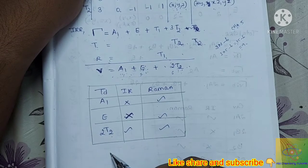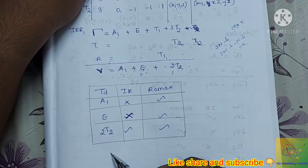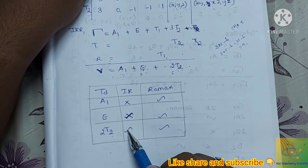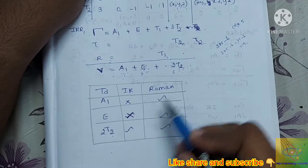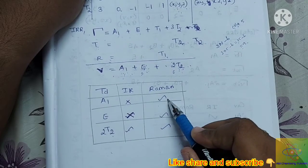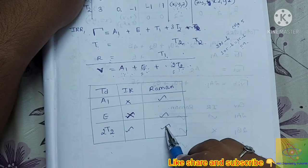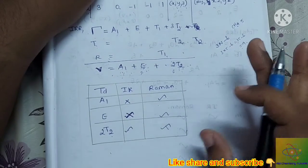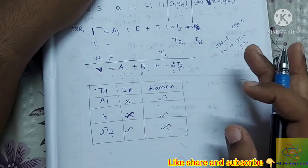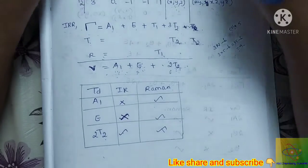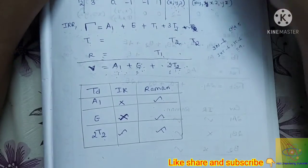T2 gives 2 × 3 = 6 modes of vibration that are IR active. For Raman activity, we look at the quadratic functions column. All 9 modes — A1, E, and 2T2 — are Raman active. So we have now calculated the IR and Raman activity for CH4 in the Td point group.